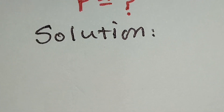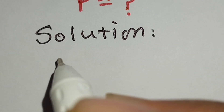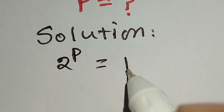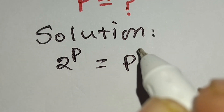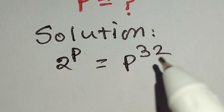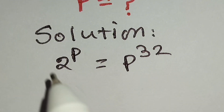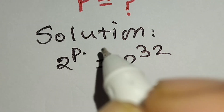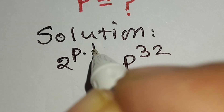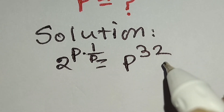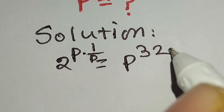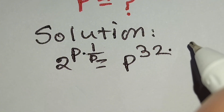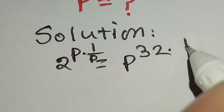The given equation is 2 to the power p is equal to p to the power 32. Now we will multiply both sides' power by 1 over p, so we can write here p times 1 over p is equal to p to the power 32 times 1 over p.